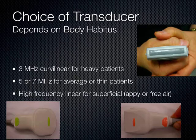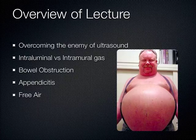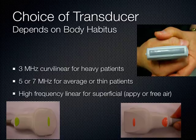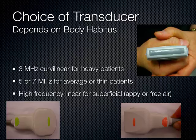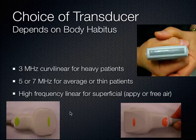We can see bowel obstructions, appendicitis, and sometimes even free air. When looking at the intestines with ultrasound, you want to use the highest possible frequency for the best resolution, as long as you can penetrate to the depth of interest. Usually on most patients we use the linear probe — that gets us our answer almost all the time because it's high frequency. Occasionally we have to use the curvilinear probe down in the 3 megahertz range for larger patients.